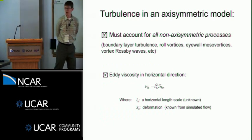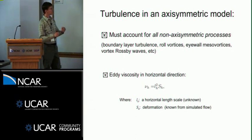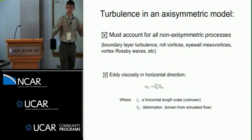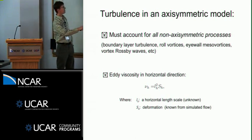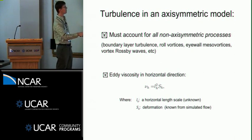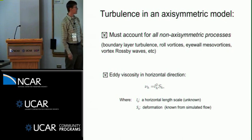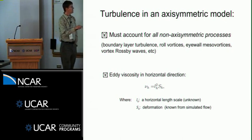Two notes on turbulence in an axisymmetric model before I start to show you some more results. The first thing you need to know is that turbulence in an axisymmetric model must account for not only the turbulence we traditionally think of, which is you know you're on an airplane and it's bumpy that's turbulence, or you're standing outside on a sunny day and you feel a gust of warm wind that's turbulence. So it does account for that, there's boundary layer turbulence, but also anything else that's not represented on the axisymmetric, the constraints of this two-dimensional grid. So it must also account for roll vortices, eyewall mesovortices, vortex Rossby waves, you know whatever else is really happening in fully complex three-dimensional simulations.